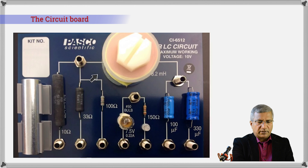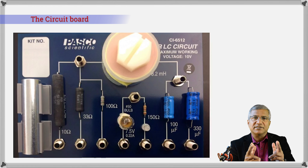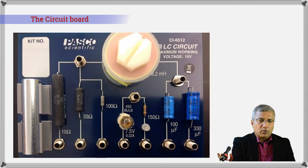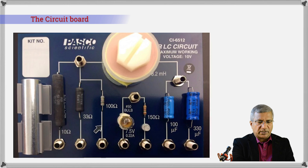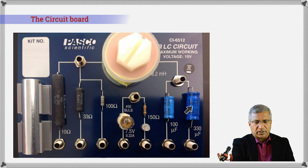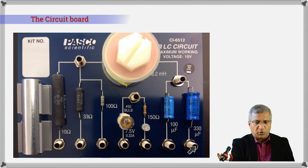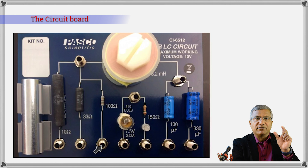The coil and the resistance are already connected in series, but we do not want the coil. So what we will do is take a cable and connect it from here to this point. When you connect that cable, the current will not flow through the coil — instead it will flow through the resistance, through that short circuit, and into the capacitor. The input is given between one end of the capacitor and one end of the resistor.